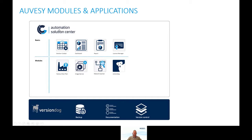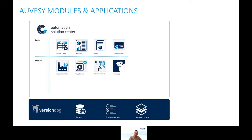Then we have optional modules you can use on top of the Automation Solutions Center. There are several modules available. One is the Factory Floor Plan — an easy solution to graphically see where a backup has failed or to know the asset state of devices. We have the Image Service, which you should already know from past VersionDoc versions — currently integrated into VersionDoc but also available as a standalone solution, because many customers request an image solution alongside the classical VersionDoc solution.